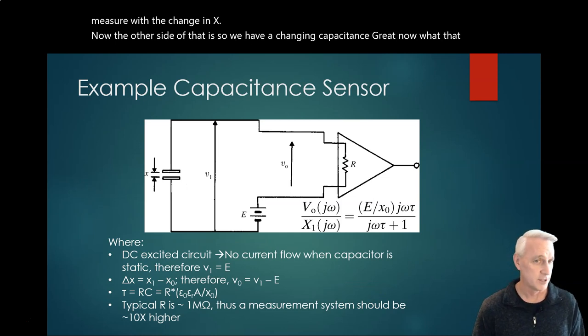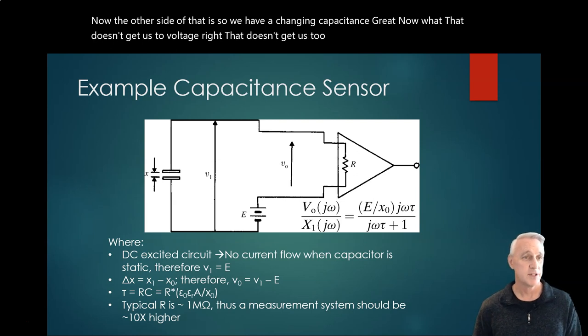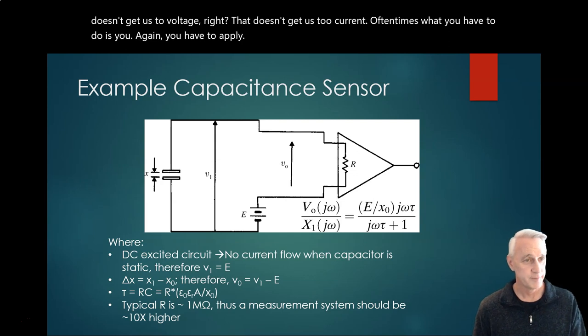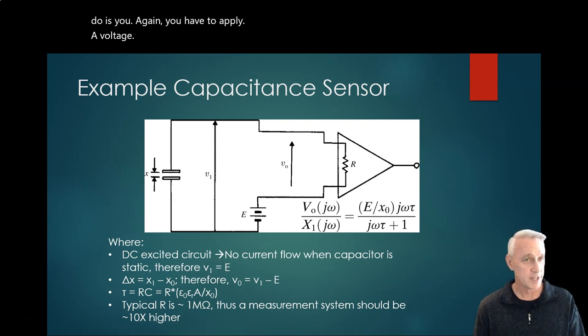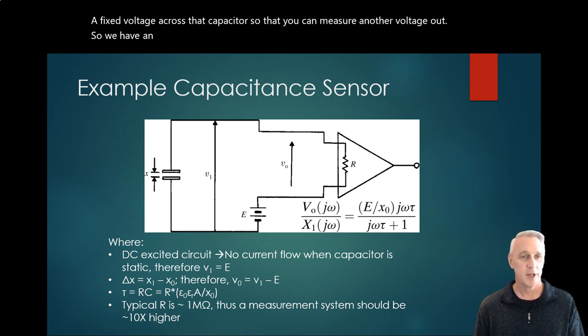Now what? That doesn't get us to voltage, right? It doesn't get us to current. So oftentimes what you have to do is you have to apply a voltage, a fixed voltage across that capacitor, so that you can measure another voltage out. So we have an input voltage applied and output voltage, which is Vo here.